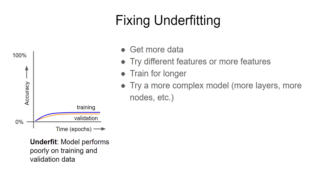Sometimes the model just needs longer to train. I've worked with complex object detection models that need 20,000 epochs to even begin seeing a drop in the loss with the training set. Try training for longer, and if the model is still not improving, then try other methods. Sometimes your model is just not complex enough to capture the trends in the data, so you may want to try adding more layers or nodes in your neural network. And sometimes your approach isn't the right one for the problem at hand — neural networks might not be the best tool, so do some research about your particular problem to see what other forms of machine learning might work.